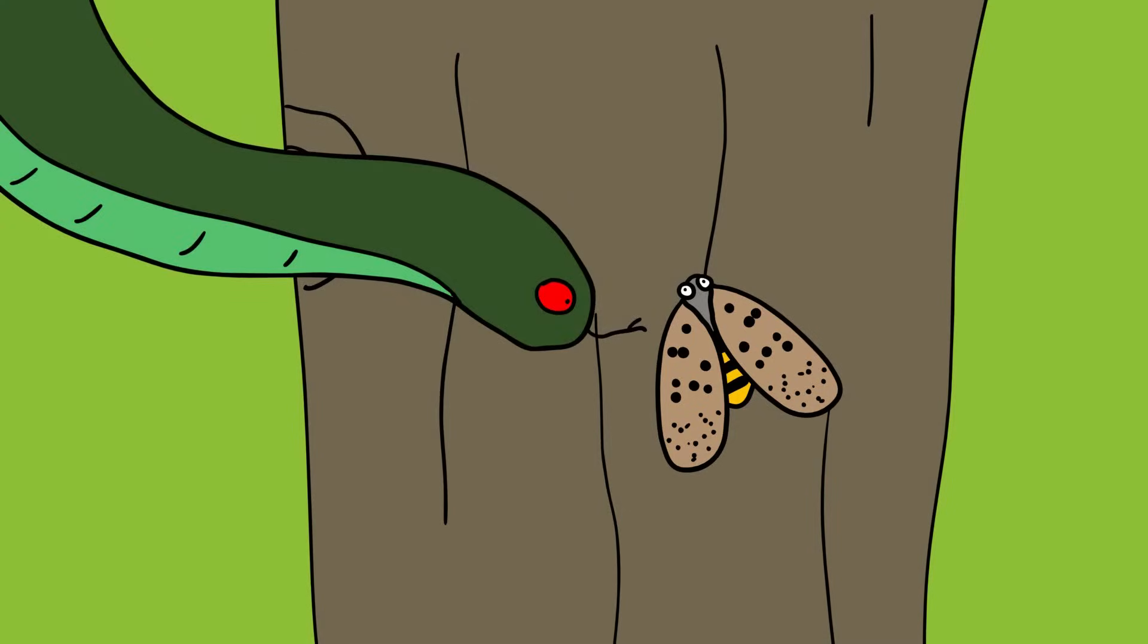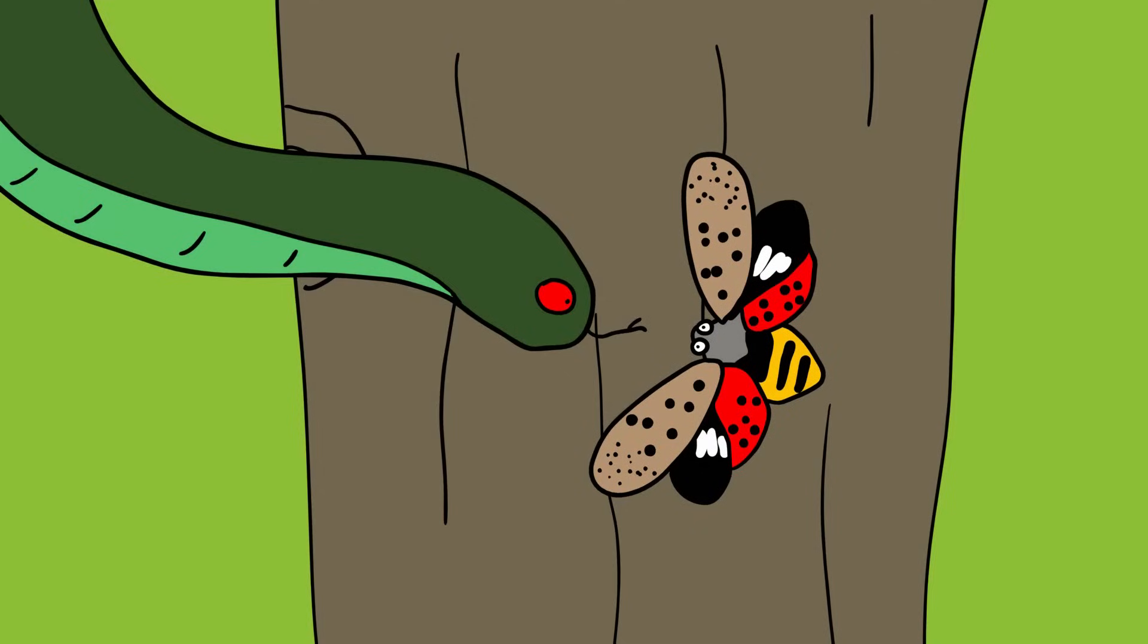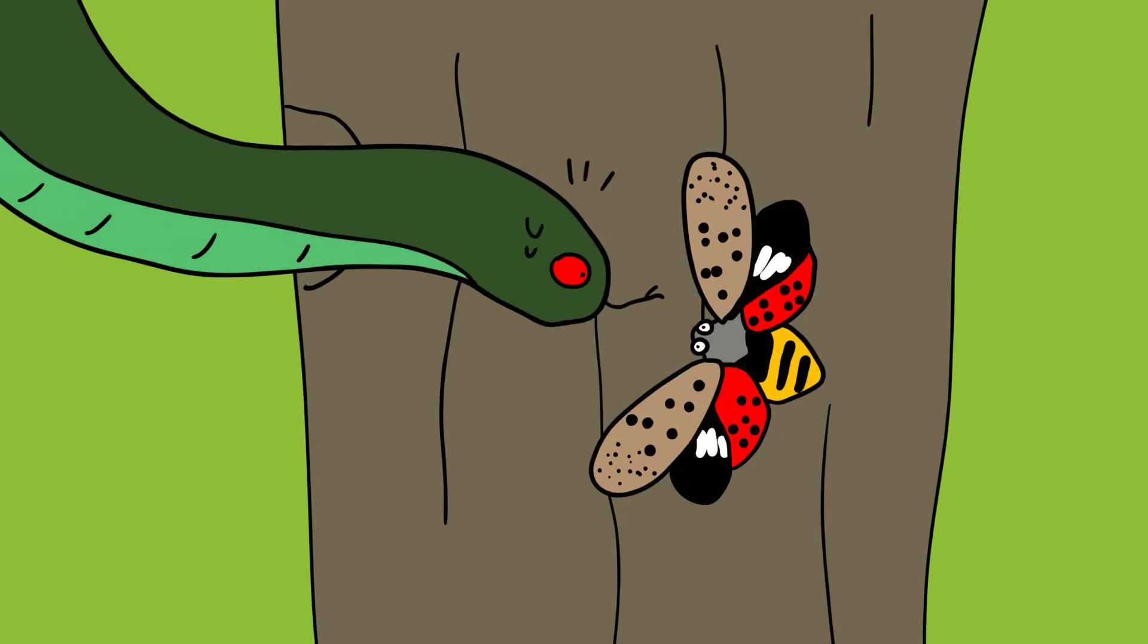If the animal is threatened or frightened, it will open these wings to reveal the lower layer which are patterned to look like the giant, glowing eyes of a predator.